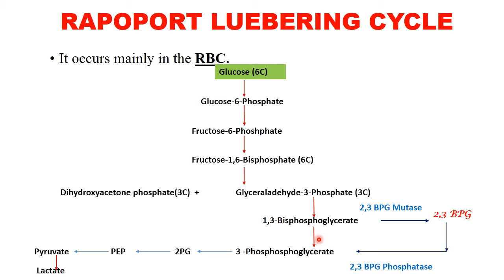This is a common catch question in viva as well as competitive postgraduate entrance examinations. In the first step, one molecule of ATP is utilized, and in the third step, one molecule of ATP is utilized — so two molecules of ATP are consumed in total. One molecule of NADH is produced when glyceraldehyde 3-phosphate is converted to 1,3-bisphosphoglycerate.